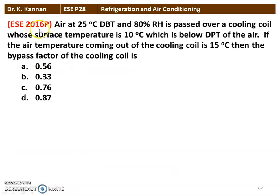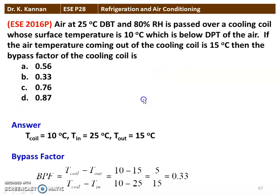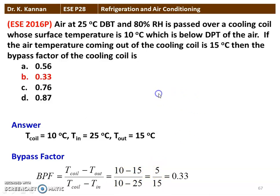Next question from the 2016 question paper: Air at 25°C dry-bulb temperature and 80% relative humidity is passed over a cooling coil whose surface temperature is 10°C, which is below the dew point of the air. The outlet air temperature is 15°C. Bypass factor = (10 − 15) / (10 − 25) = (−5) / (−15) = 0.33.